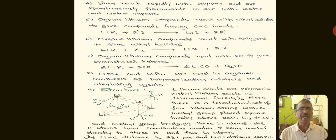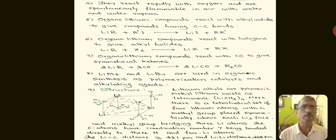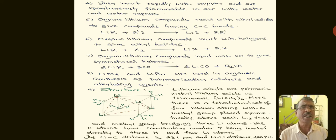Methyl lithium and butyl lithium are used in organic synthesis as polymerization catalysts and alkylating agents. Coming to the structure of methyl lithium: lithium alkyls are polymeric in nature. Methyl lithium exists as a tetramer, where four methyl lithium units combine to form a tetramer. There is a tetrahedral set of four lithium atoms with a methyl group placed symmetrically above each three-lithium face.